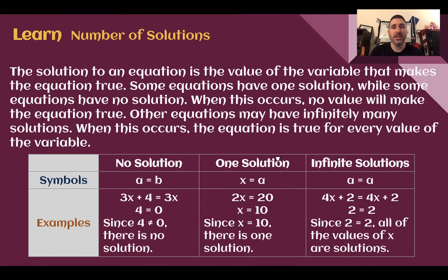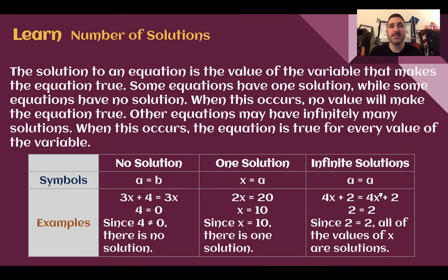Is 4 equal to 0? It's not. There's no variable anymore — it all went to 0 — there is no solution. What we're used to is one solution, where the variable does not eliminate itself and we can solve for it. If you can do this, there's one solution. For infinite solutions, the variable will also eliminate, but you'll end up with a true statement — such as 2 equals 2. Since any number you plug in gives the same value on both sides, that's infinite solutions, meaning any number you pick will work.